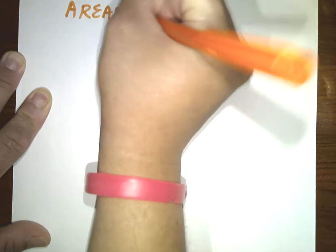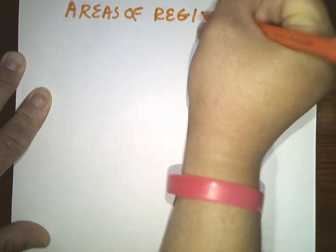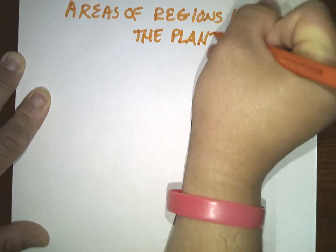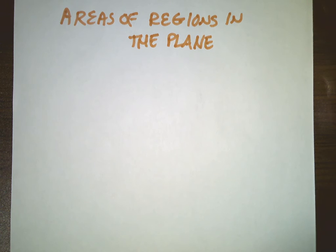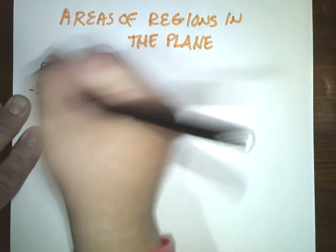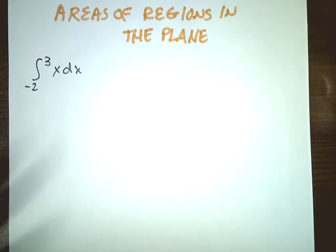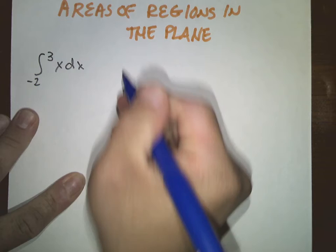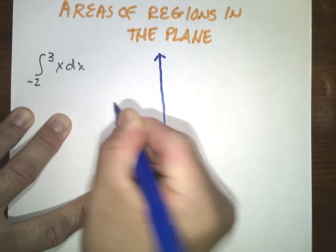Alright, so we are going to start with the areas of regions in the plane, but I'm going to start with doing a review of something else here. So let's say that you had the integral from negative 2 to 3 of x dx, and I know that you've definitely, hopefully, seen that one before, and the graph of it looked like this.